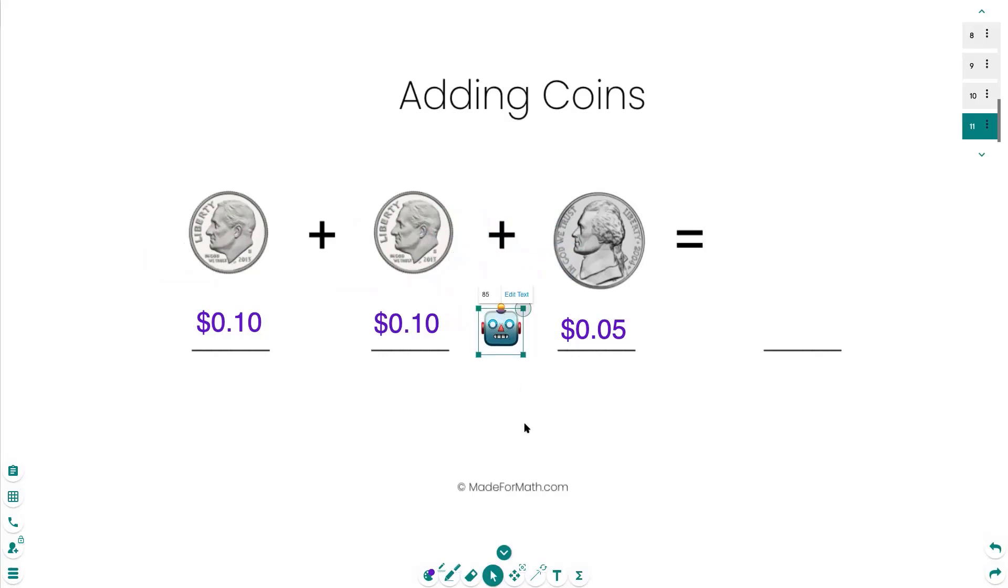And the reason I've added this is sometimes you will notice your child or your student, if they're adding two different types of coins, they might be tempted to continue counting in the coin quantity they were counting in before. So, for example, if I was starting over here with dimes, I might say ten, twenty.